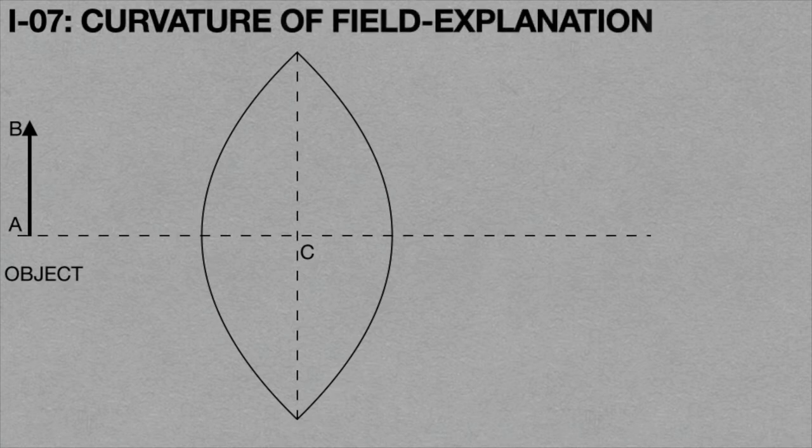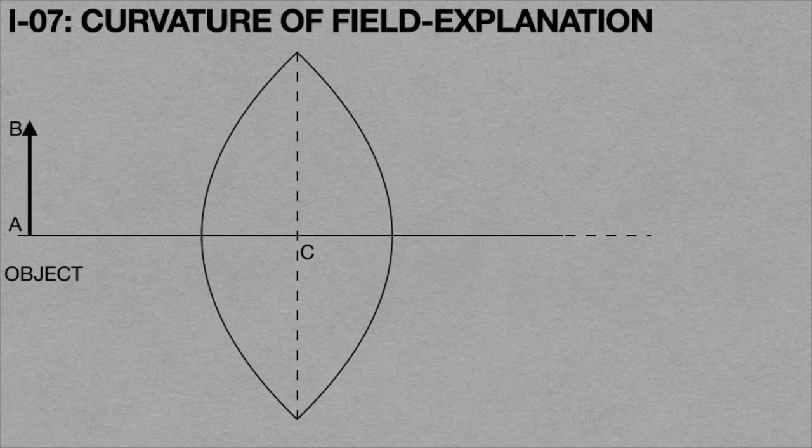Consider a straight line object AB on the principal axis as shown in the figure. The light rays coming from point A travel on the principal axis and pass through the lens through center C. Then it forms an image A dash for A.